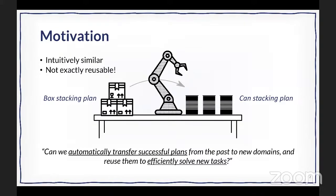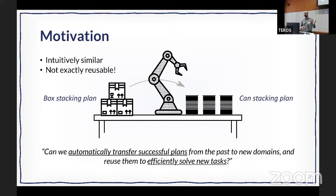For concrete motivation: consider a robot operating in a manipulation domain with three boxes and three cans. The robot is first tasked with stacking the three boxes in a pyramid configuration — after intense calculation it finds a successful plan. Then it's given another task to stack the three cans on the other side of the table. A human observer can intuitively say these are two related tasks whose solutions would be related, but we cannot reuse the same plan directly because the objects are different and the location is different. The question: how can we automatically transfer knowledge from successful solutions of previous tasks to more efficiently solve future tasks?